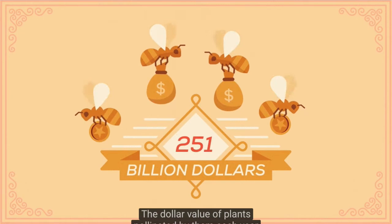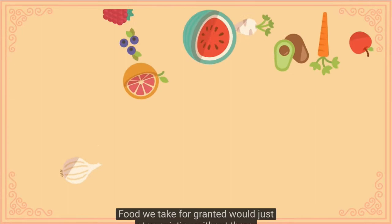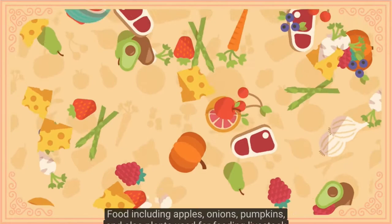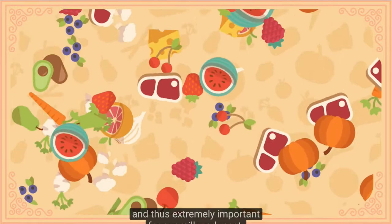The dollar value of plants pollinated by them each year is around 265 billion. Food we take for granted would just stop existing without them, or there would be a massive decrease in productivity. Food including apples, onions, pumpkins, and also plants used for feeding livestock, and thus extremely important for our milk and meat.